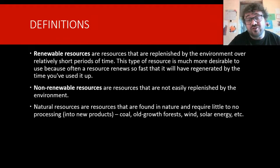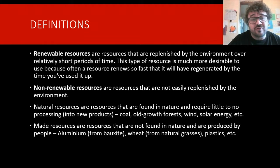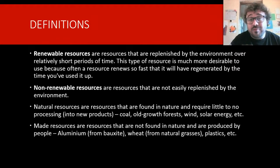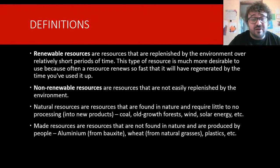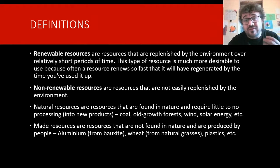And one causes horrendous pollution and the other two don't. Then we have made resources — these are resources which aren't found in nature; they're made or produced by people. Aluminium is one we'll talk about a bit, and aluminium comes from an ore called bauxite. Wheat isn't natural — it was bred from natural grasses. Plastics, etc. So some of those are good, some are bad. Once again, made resources or man-made doesn't necessarily mean not good for the environment.